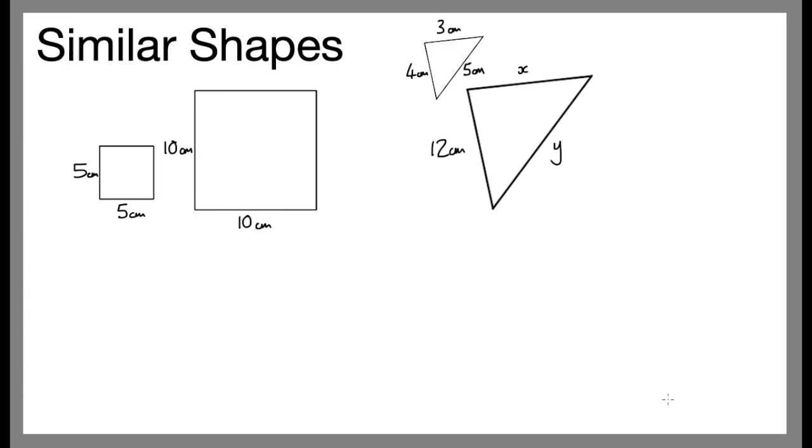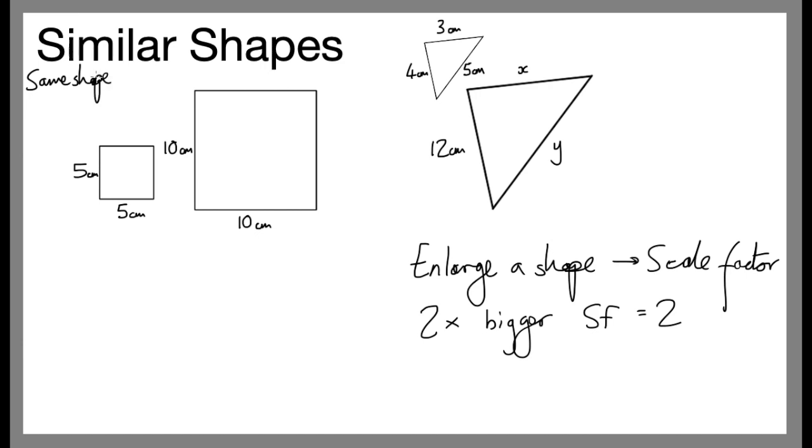Next thing to look at. Similar shapes. Well, with similar shapes, essentially what I've done is I have enlarged a shape. Okay, so this sort of carries on from our enlargement. So, enlarge a shape. What do you need to enlarge a shape? Well, one of the things you need is a scale factor. For example, if I make a shape 2 times bigger, this is a scale factor of 2. Scale factors are really, really important when we're trying to work out similar shapes. Now, I'm being told these two shapes are similar. This means they're the same shape, but different size. The word congruent means same shape, same size. But these are the same shape, different size.